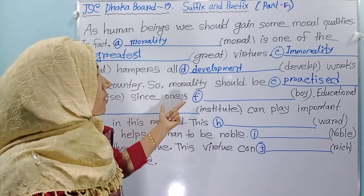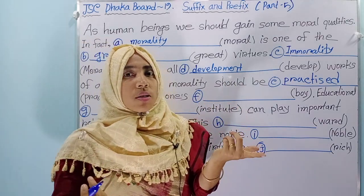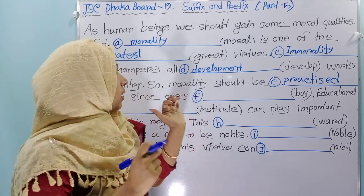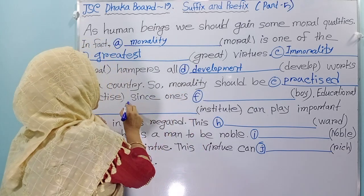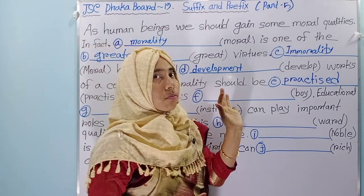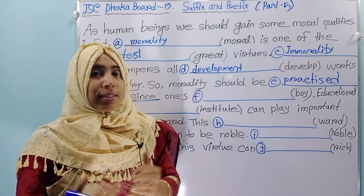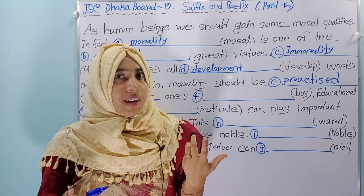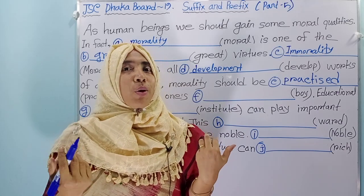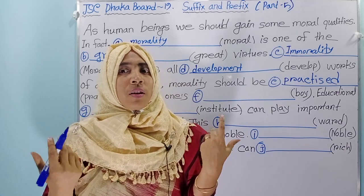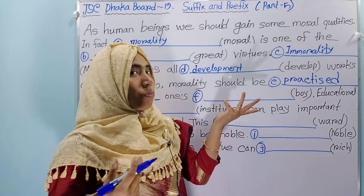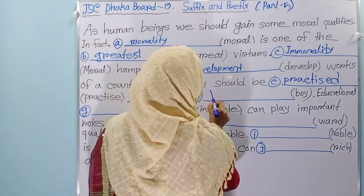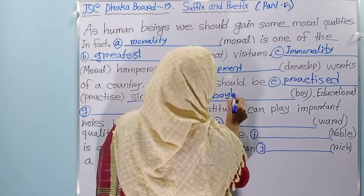Since once — boy. Here you see 'since' — that means here you have to use a period of time. So what is the period of time here? Boy — no. So here you have to use a period of time, that means boyhood. Boyhood.